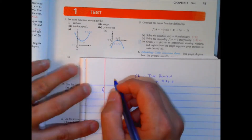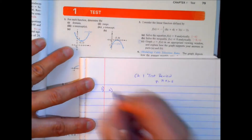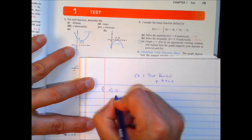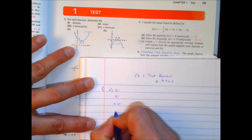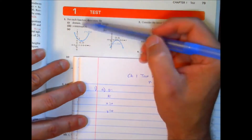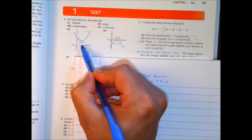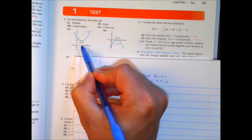Number 1 — we're given different graphs. For number 1, we have to find the domain, the range, the x-intercept, and the y-intercept. Domain is your x numbers. Looking at the graph, right here at the vertex is x equals 2.